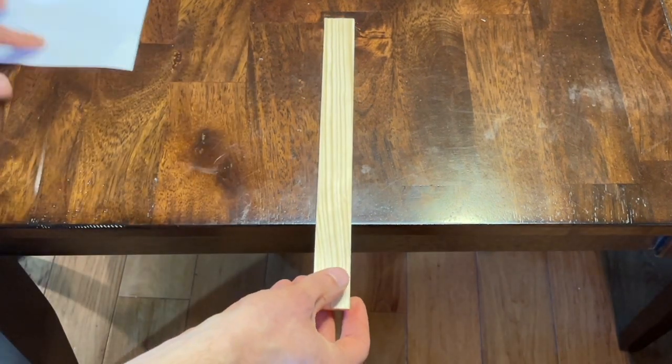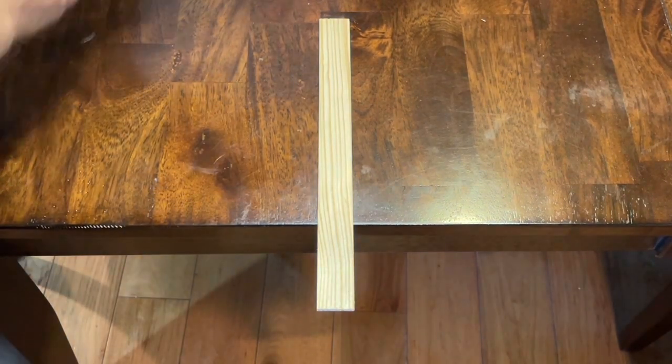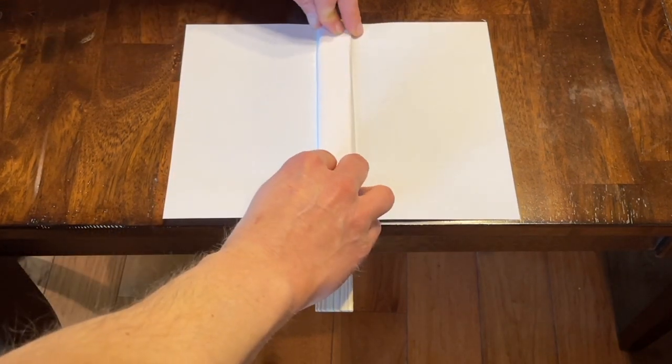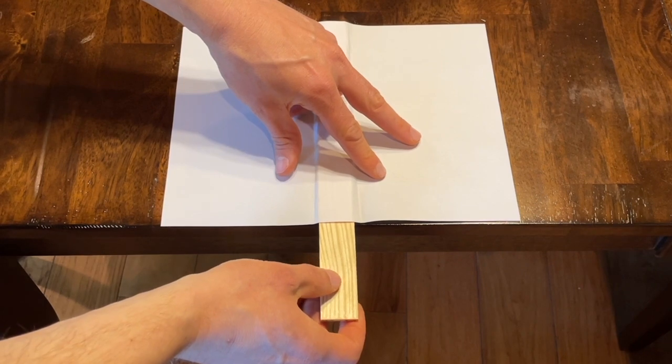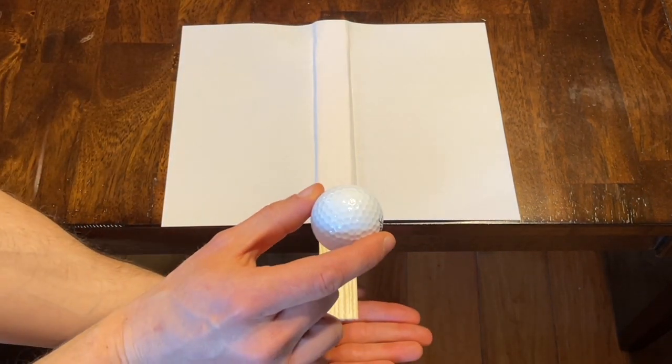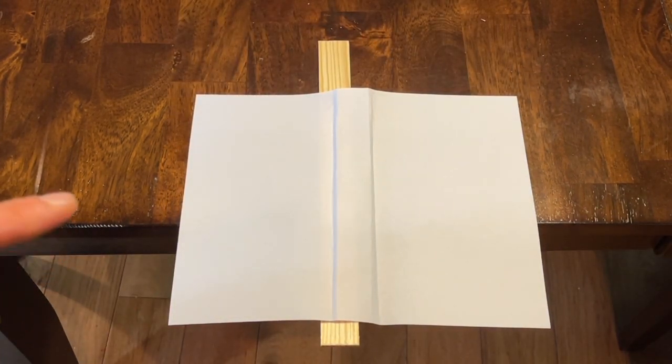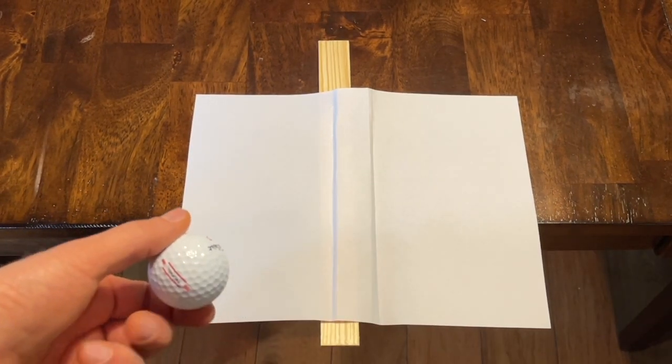I'm going to go ahead and do one more scenario here where I have another piece of paper that I folded neatly to fit the form of the paint stick. And now watch what happens when I drop the ball this time. You can see that it barely moved the paint stick before the golf ball fell off the end of the paint stick.